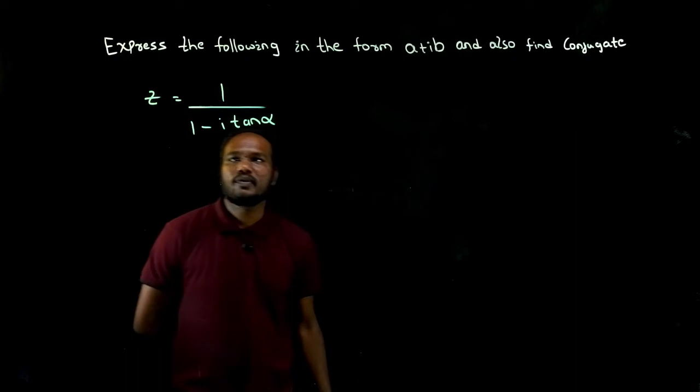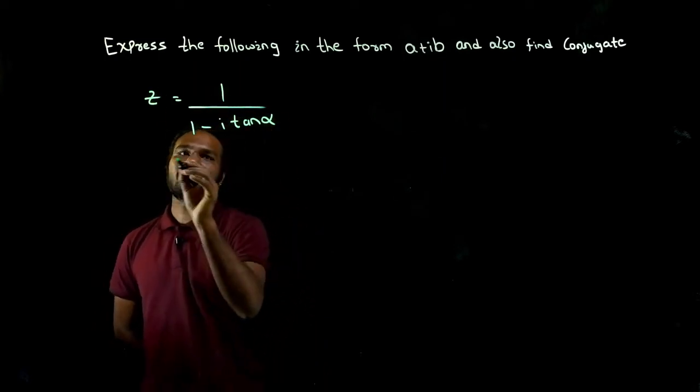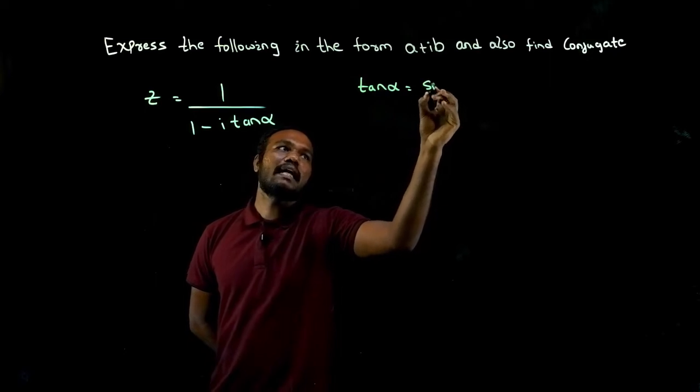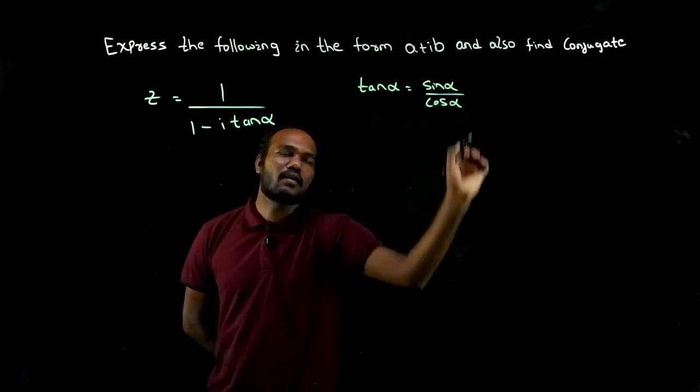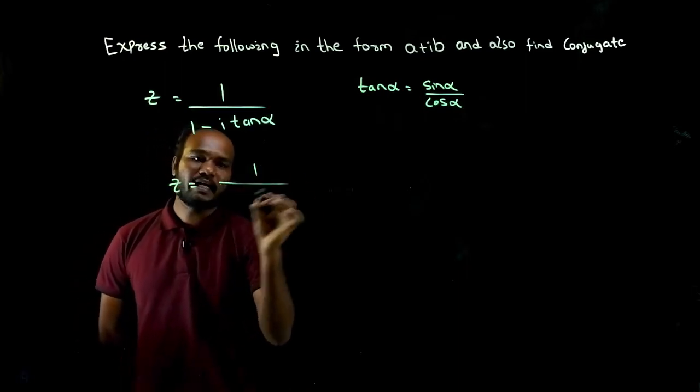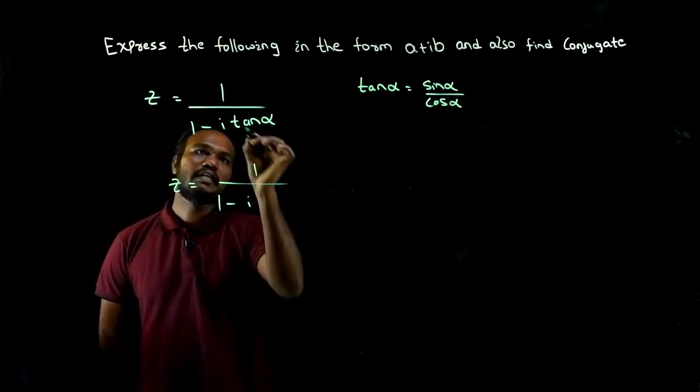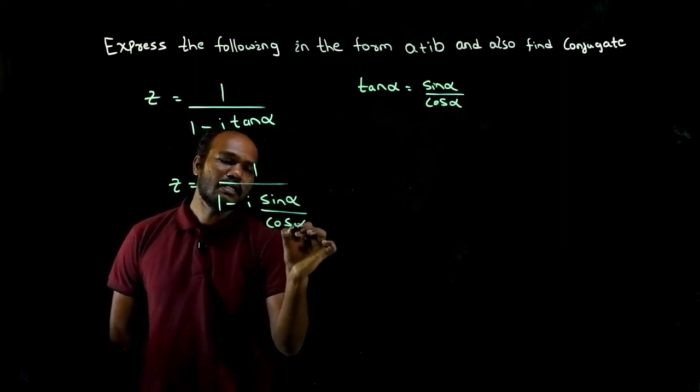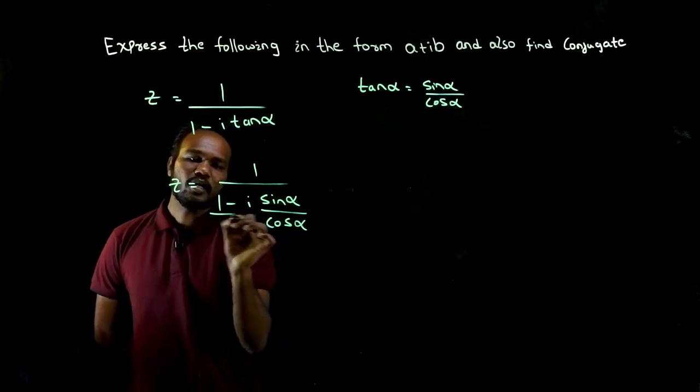So what we need to do, see here it is given as something like this. We know tan alpha is what? Sine alpha divided by cos alpha. So Z is nothing but 1 by 1 minus I times tan alpha, which can be written as sine alpha divided by cos alpha in the denominator.